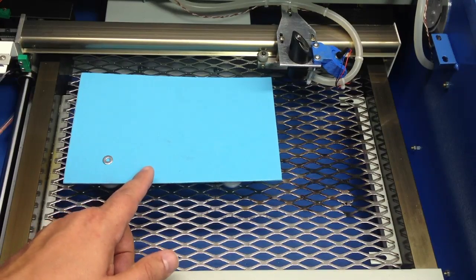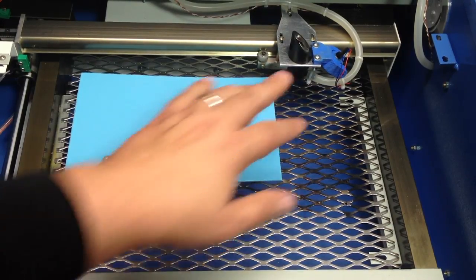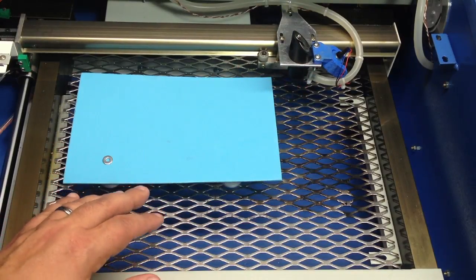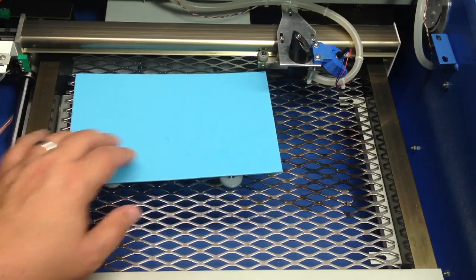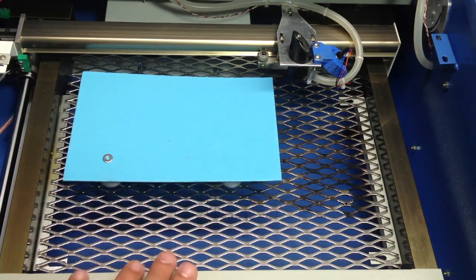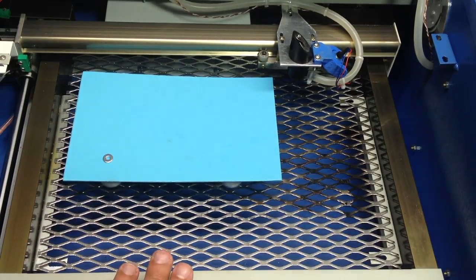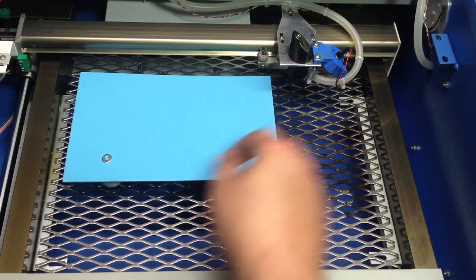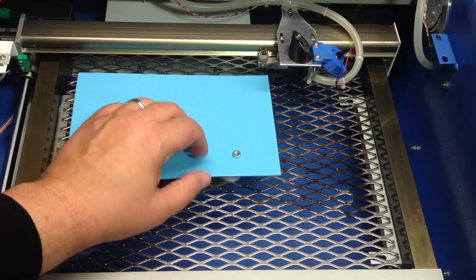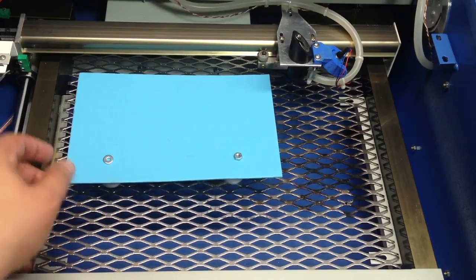It tends to want to burn sometimes, so I use the air assist quite a bit. But what happens with the air assist is it tends to blow it around. Now with this, I can put a nut or washer, whatever piece of metal, and it easily holds this in place.